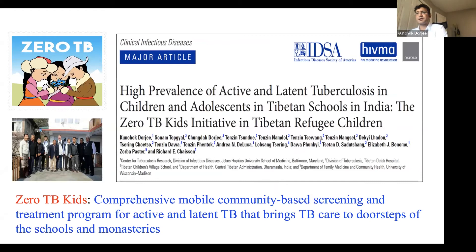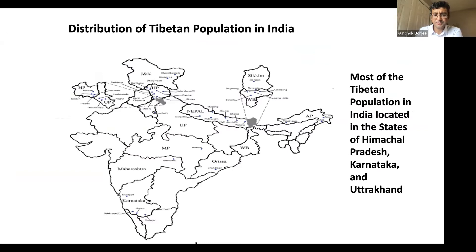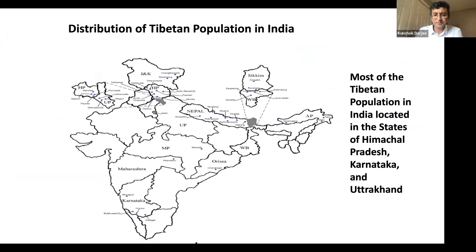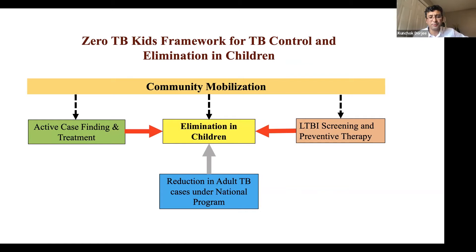When I came to Johns Hopkins as a postdoc, I worked with Dr. Chason — my mentor and now a colleague — and we developed the Zero TB in Tibetan Kids project. It was a comprehensive, mobile, community-based screening and treatment program for both active and latent TB, bringing TB care to the doors of schools and monasteries. We went from North India to South India across three different states, doing active case finding and treatment, latent TB screening and preventive therapy, and making efforts to reduce adult TB cases in the national program — all aimed at contributing to TB elimination in children under the umbrella of broad community mobilization.